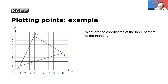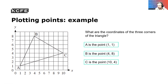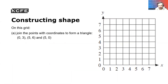So what are the coordinates for the three corners of this triangle? We go along the corridor — so A would be one one, B would be four eight, and C would be ten four. Let's have a look: one one, four eight, ten four — magic.